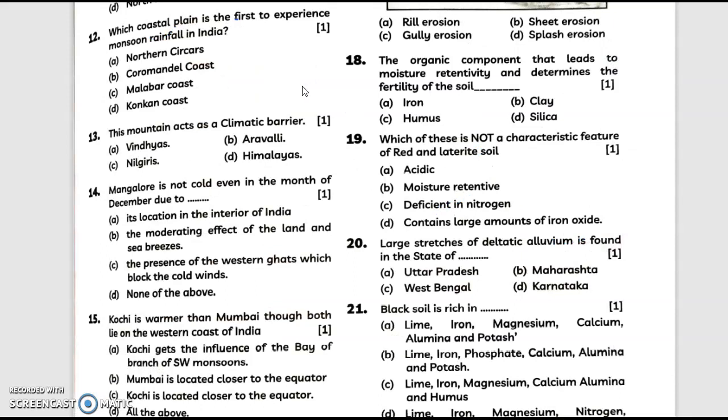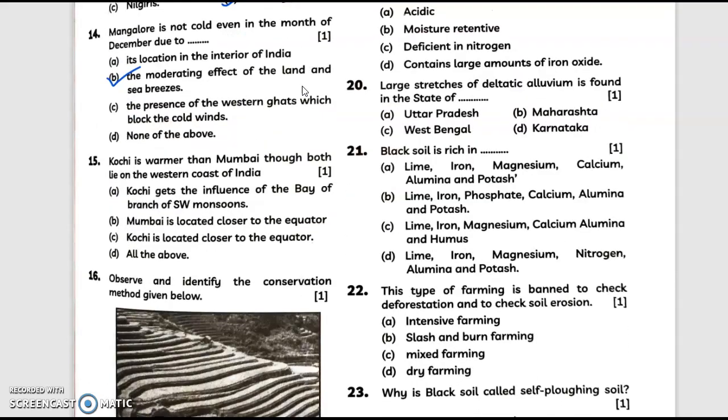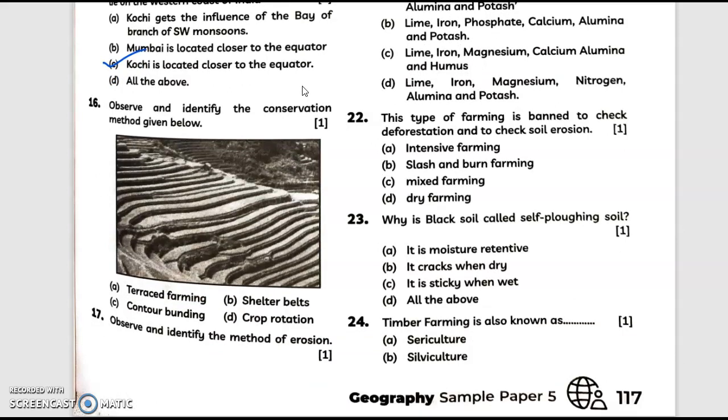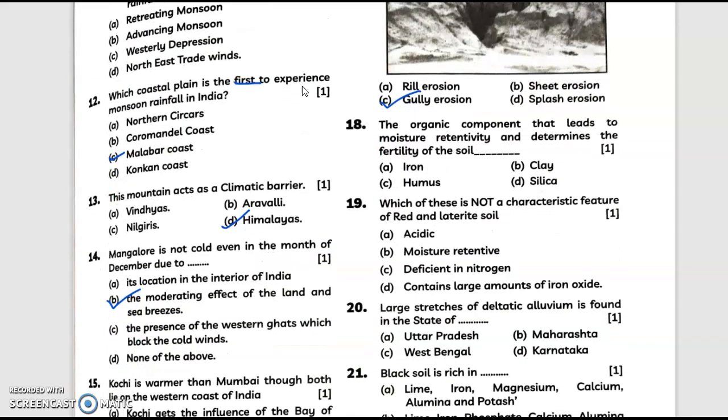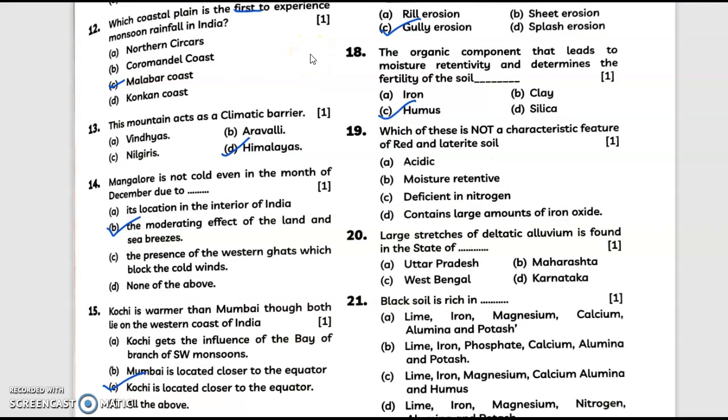Which coastal plain is the first to experience monsoon rainfall in India? Answer is C, Malabar coast. This mountain acts as a climate barrier - answer is option D, Himalayas. Mangalore is not cold even in the month of December due to... answer is B. Kochi is warmer than Mumbai though both lie on the western coast of India - answer is option C. Question number 16: observe and identify the conservation method given below. This is terrace farming. Observe and identify the method of erosion - this is gully erosion. Question number 18: the organic component that leads to moisture retentivity and determines the fertility of the soil - answer is C, humus.